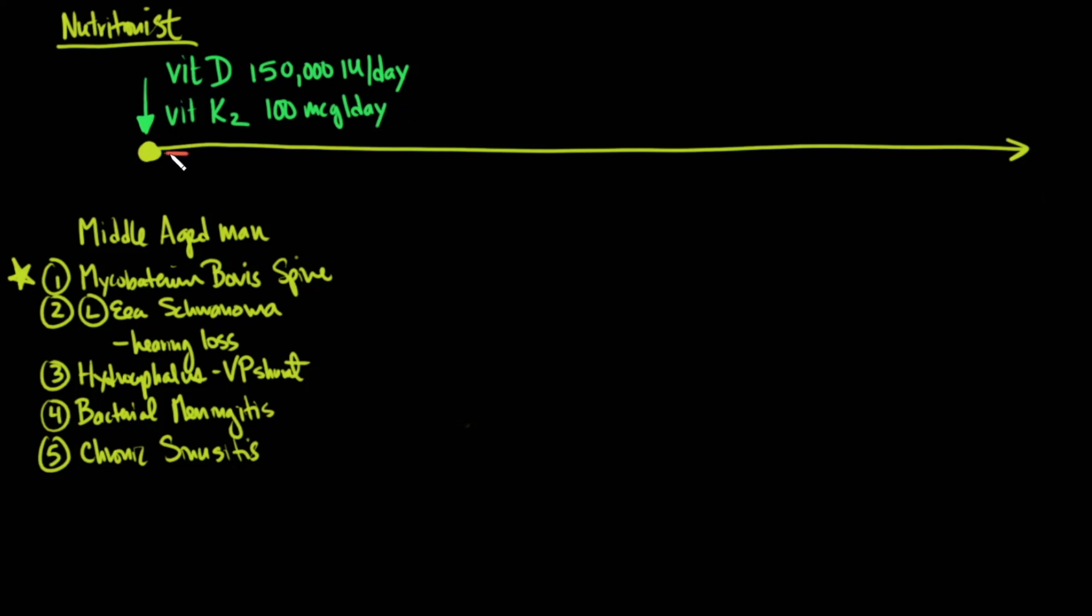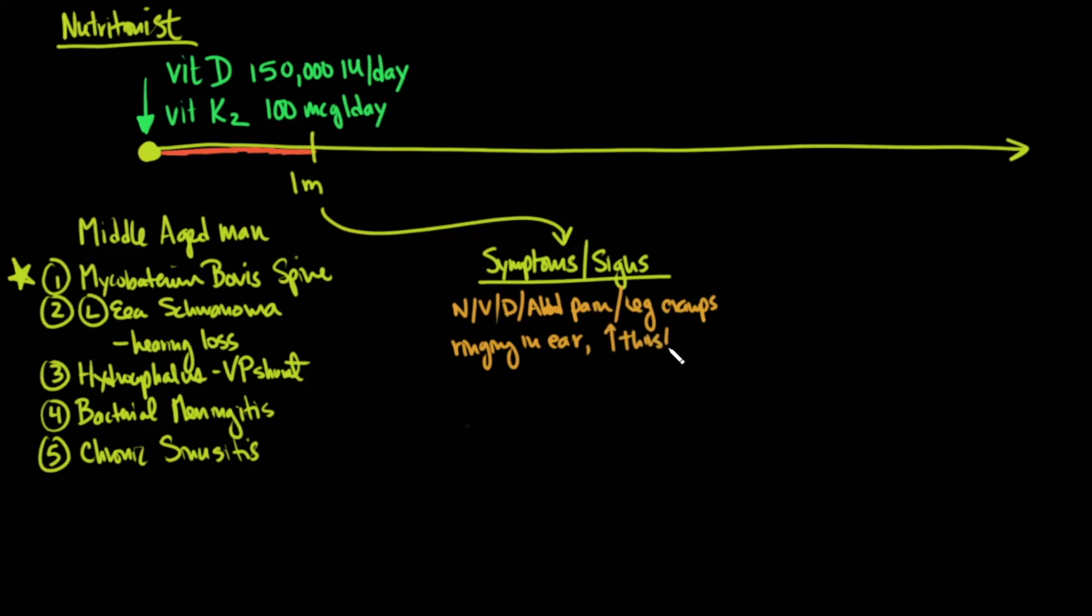After taking these supplements for about a month, he started to develop symptoms: nausea, vomiting, diarrhea, abdominal pain, leg cramps, ringing in his ear, increased thirst, and a 28 pound or 13 kilogram weight loss. Fortunately, when he started getting these symptoms, he immediately stopped taking the supplements. So all in all, these supplements were being taken for about a one-month period.